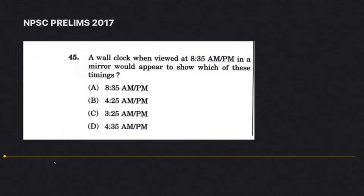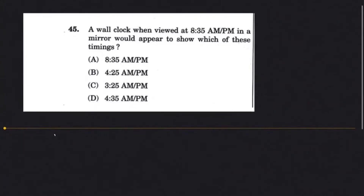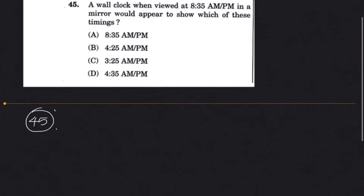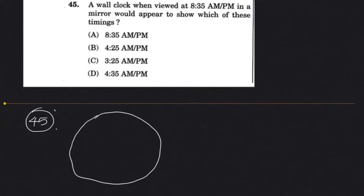In this video we will start solving some questions from NPSC prelims 2017. Question 45 says: a wall clock when viewed at 8:35 a.m. in a mirror would appear to show which of these timings? To understand this, suppose this is the clock showing 8:35 — it will look something like this.